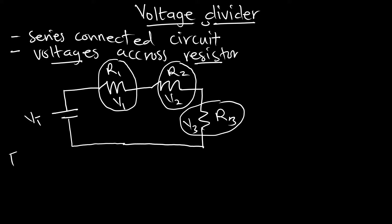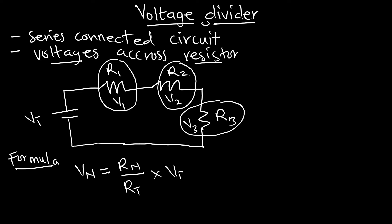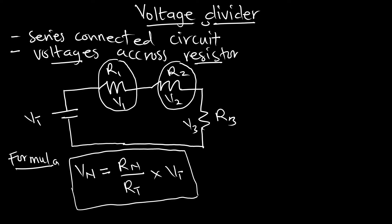It has a formula or an expression for a series connected circuit. The voltage drop across a resistor, which we will call VN, is given by Rn over RT multiplied by VT. This is the expression for the voltage divider. Once you know this, you are able to calculate the voltage drop for each resistor connected in a series circuit.